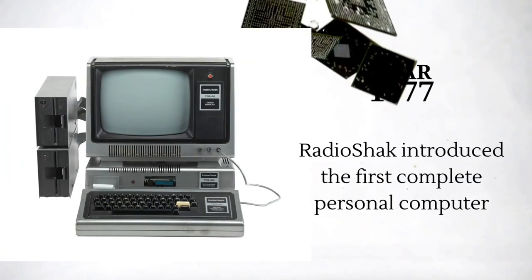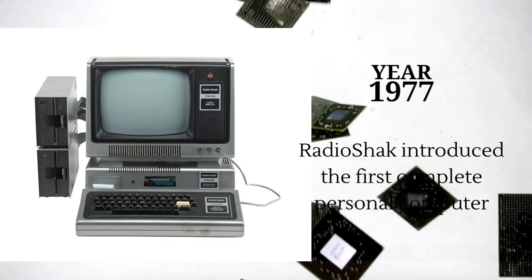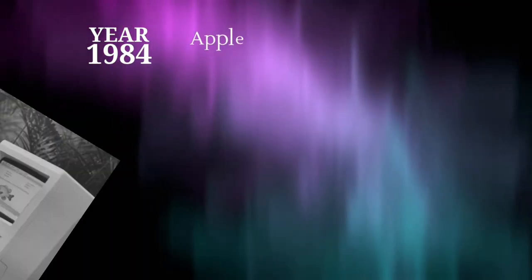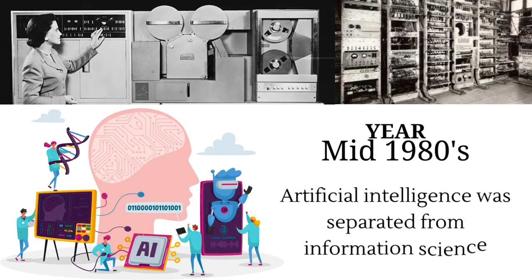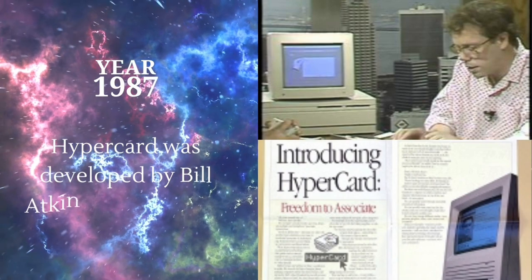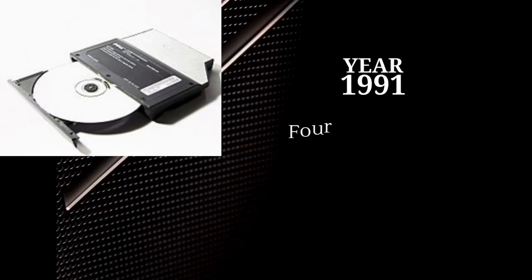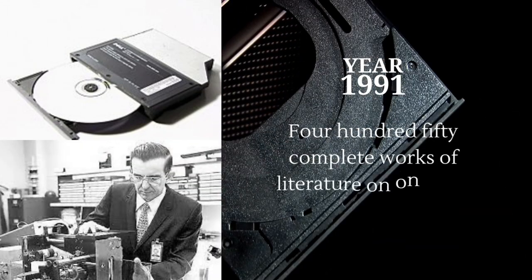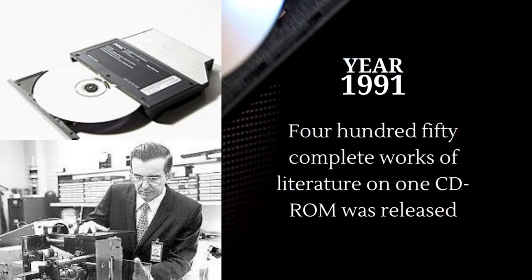In 1977, RadioShack introduced the first complete personal computer. In 1984, the Apple Macintosh computer was introduced. In the mid-1980s, artificial intelligence was separated from information science. In 1987, HyperCard was developed by Bill Atkinson. In 1991, 450 complete works of literature on one CD-ROM were released.